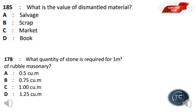What is the value of dismantled material? The options are: salvage, scrap, market, book. The answer is Option B — Scrap value. Note that scrap value is the value of dismantled material, while salvage value equals the value of dismantled material minus the cost of dismantling.